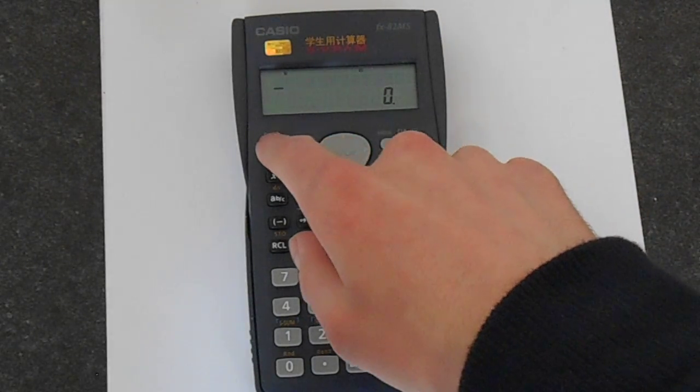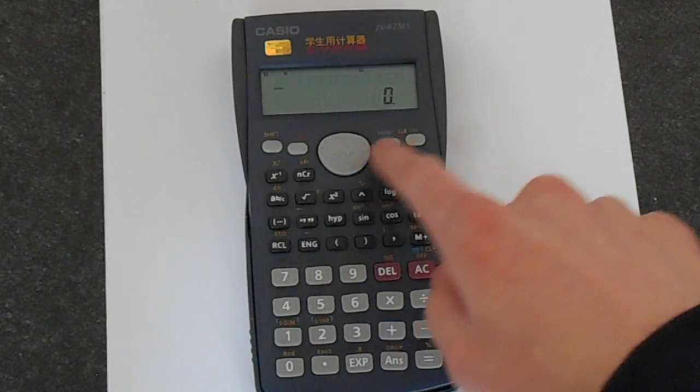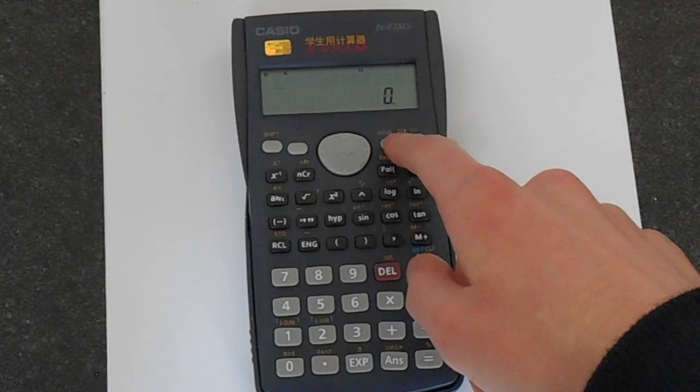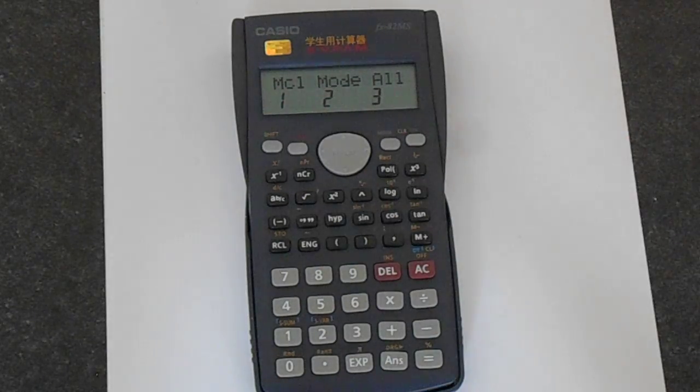So here's how we do it. You press shift and then the shift lets you access this clear CLR. This puts up this menu here.